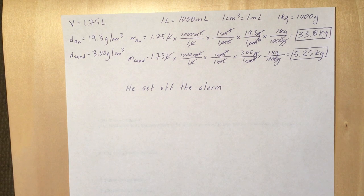So we see the volume of both of these items is the same at 1.75 liters and the problem actually gives you the density of both gold and sand. So you're gonna need to use those densities as conversion factors within the problem. And I've also put the other three conversion factors that you need in this problem to do it the way I'm doing it.